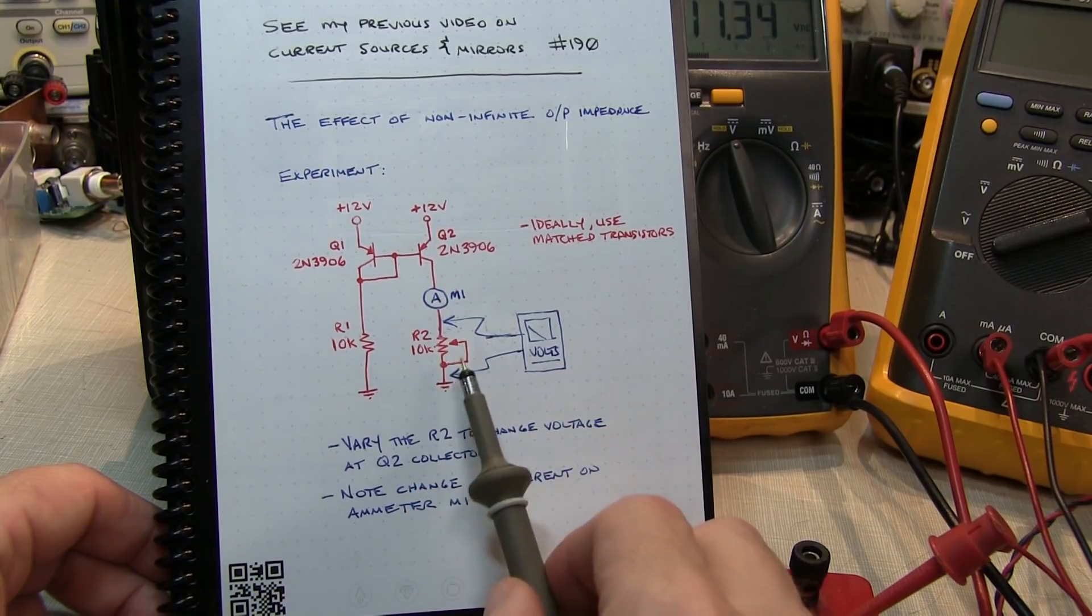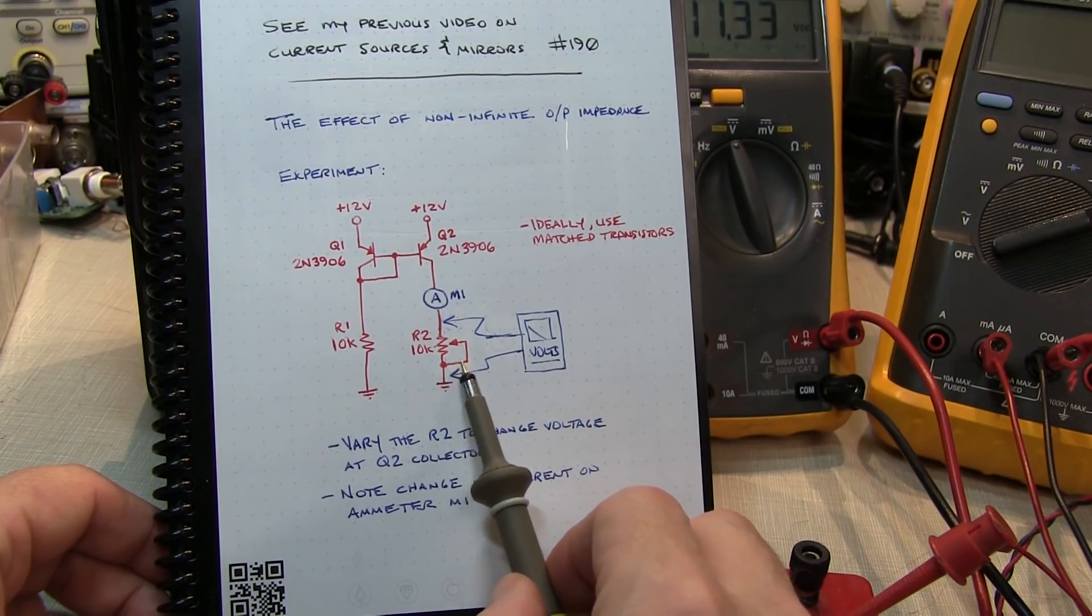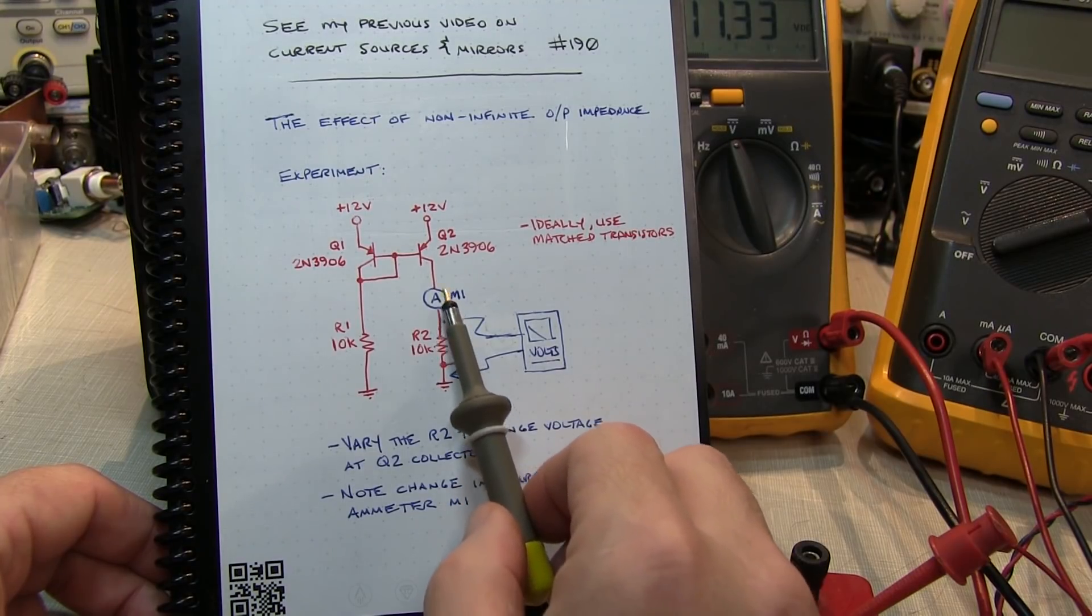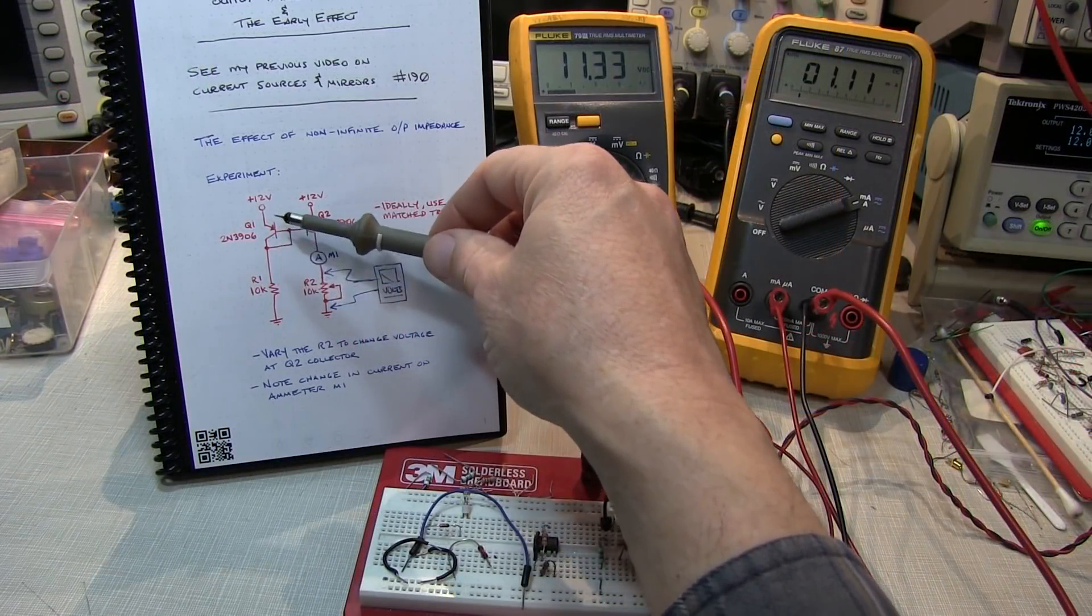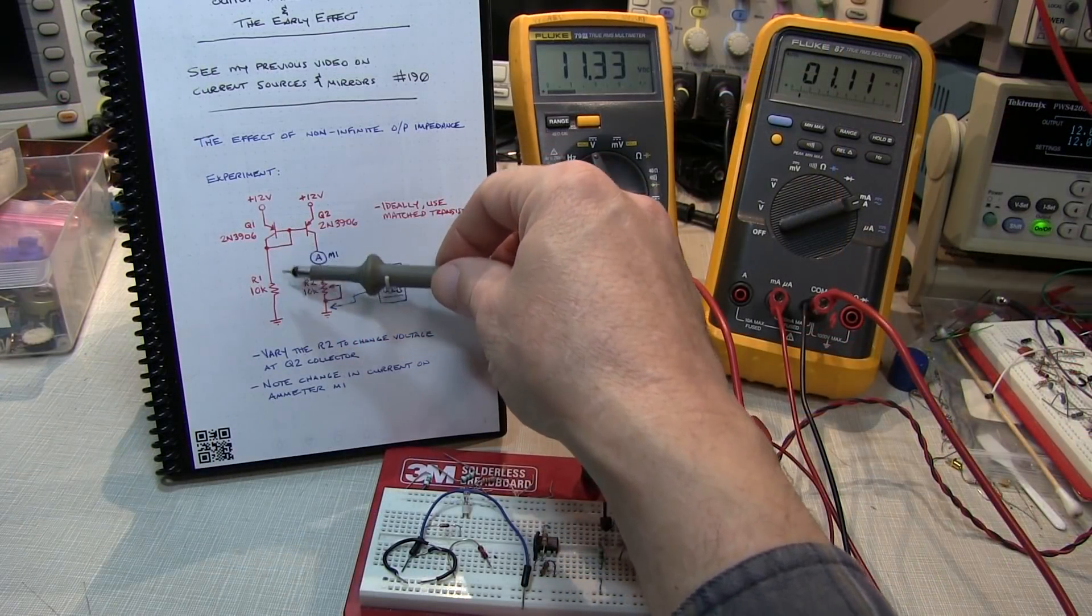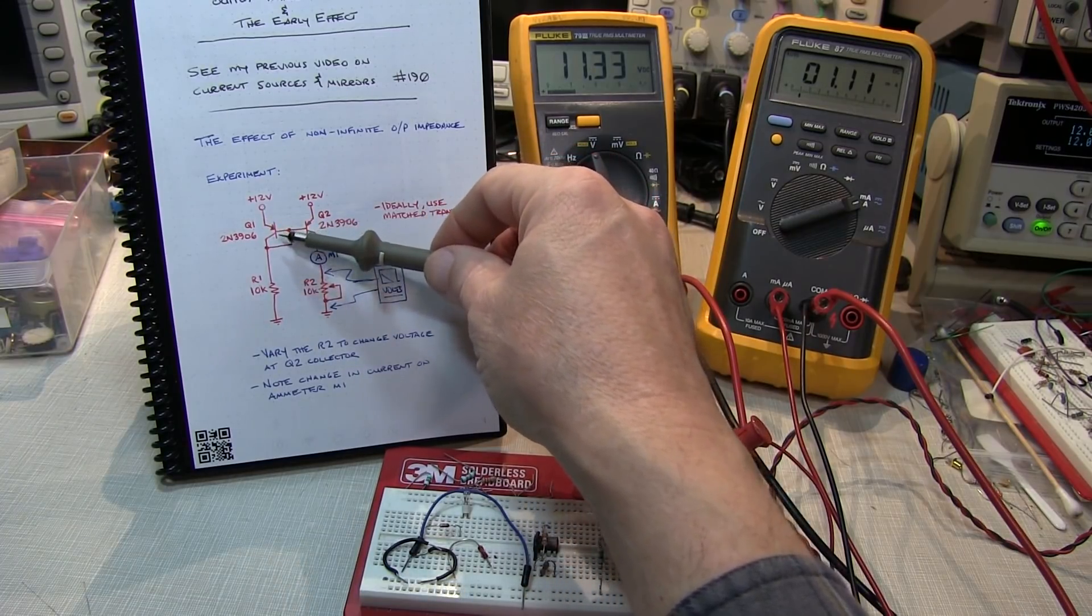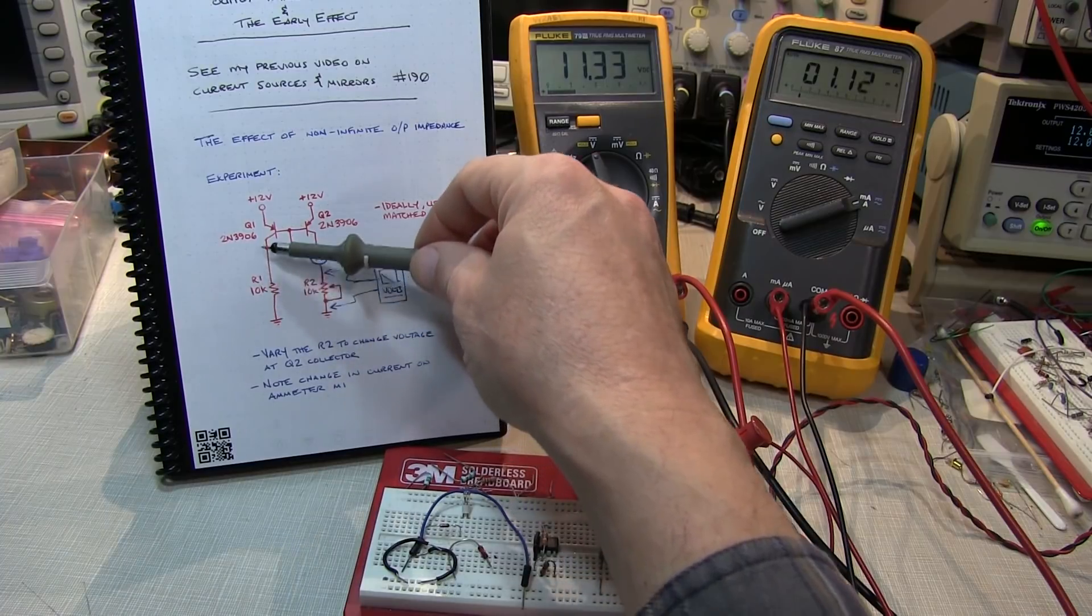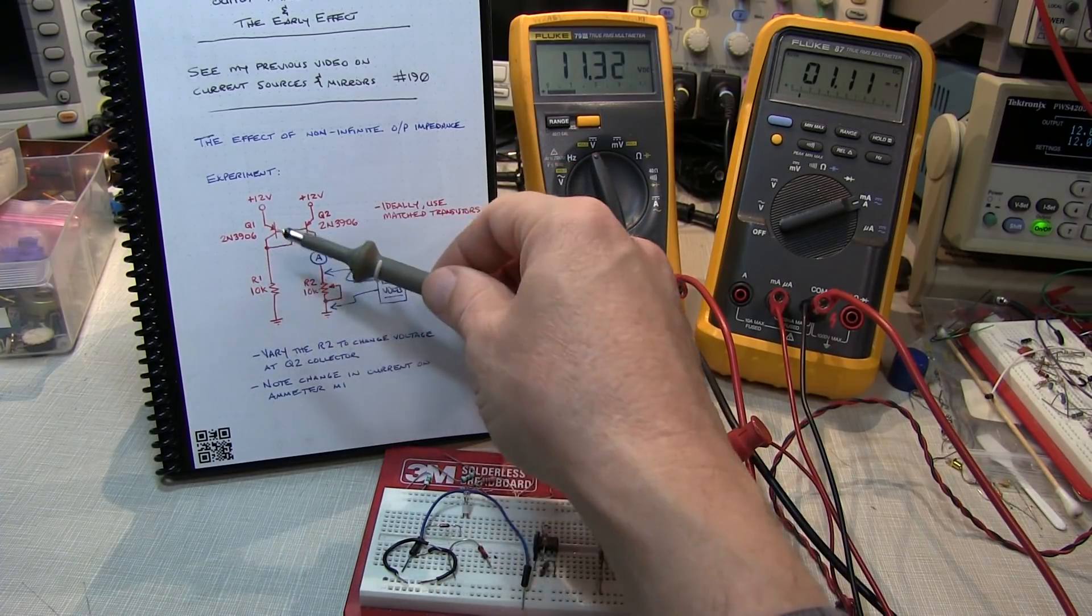We'll monitor that current with M1 and we'll vary the load from essentially 0 ohms up to 10K ohms and watch the change in current. Now we expect this current to be just a little over 1.1 milliamps, because we have 12V minus about 0.7V, that puts the voltage across the 10K resistor to be about 11.3V divided by 10K, that would be about 1.13 milliamps.